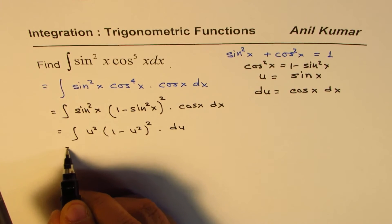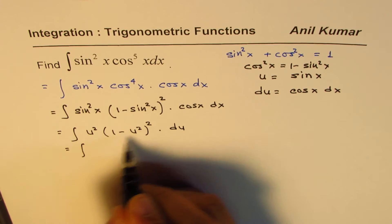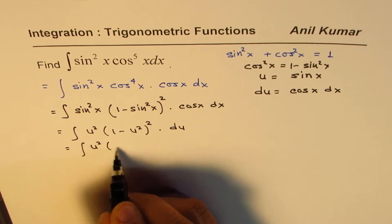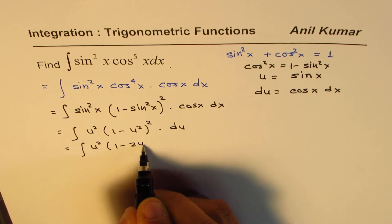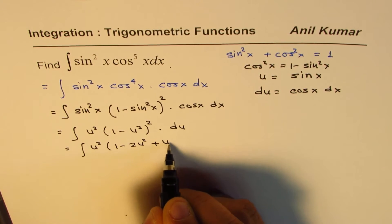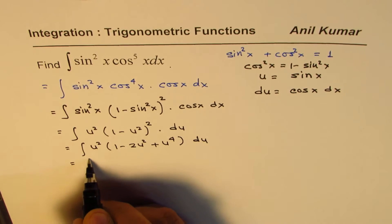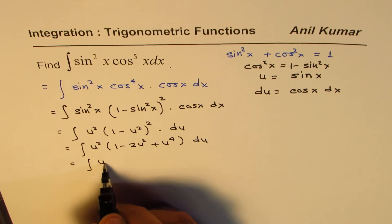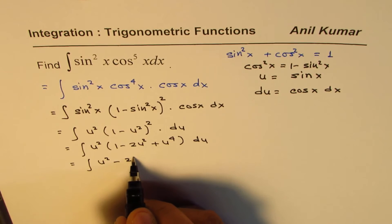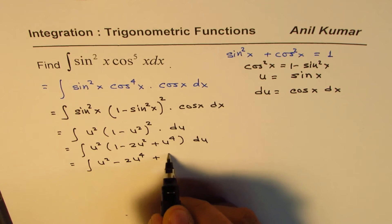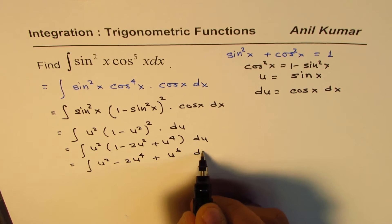And that gives us, let's open this, u square minus 2 u to the power of 4, plus u to the power of 6, du.